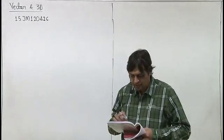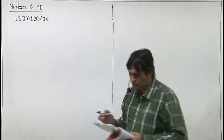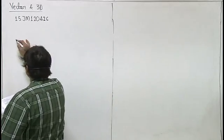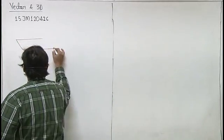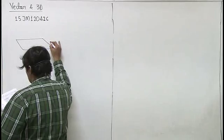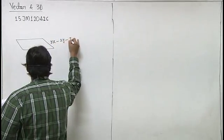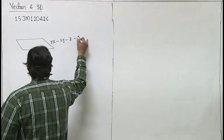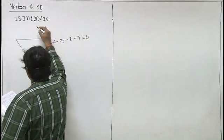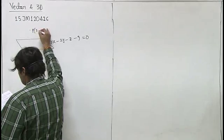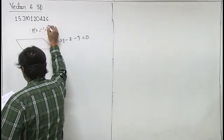We have to find reflection of this point on this plane. The plane equation is given: 3x minus 2y minus z minus 9 equals 0. The point whose reflection we need to find is (2, -1, 3).